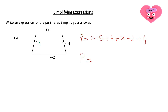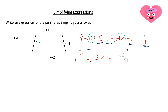We will simplify the like terms: x and x are like terms — there is an invisible 1 here and an invisible 1 here, so 1x plus 1x equals 2x. Then because all these numbers are positive we can add them: 5 plus 4 plus 2 plus 4 equals 15. So this is the perimeter expression for this trapezium. I hope you like this video — till next video, bye bye.